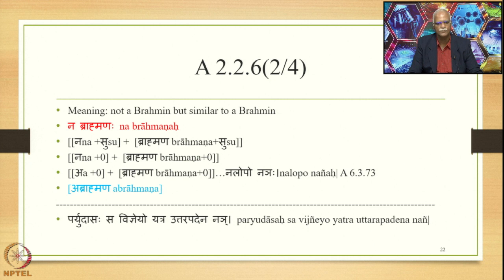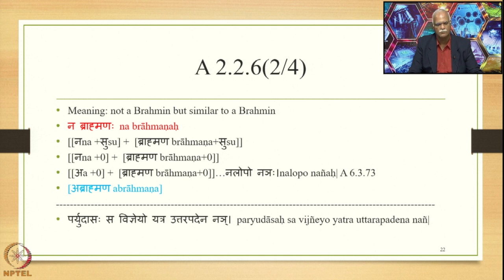Then Sutra 6.3.73, Nalopo Nayaha, applies and deletes the consonant Na of Na, giving A + 0 + Brahman + 0. The finally derived output is Abrahmana, meaning 'not a Brahmin but similar to a Brahmin' — referring to a person who is not a Brahmin.